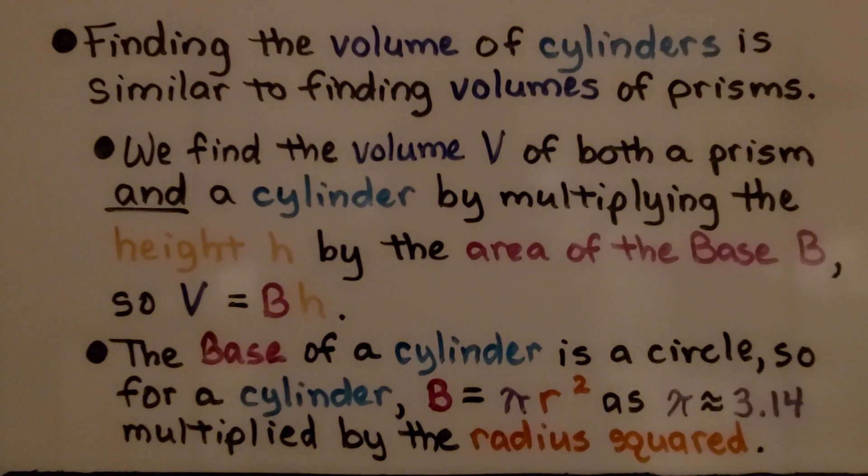We find the volume V of both a prism and a cylinder by multiplying the height h by the area of the base B. So V is equal to Bh, that's our formula.